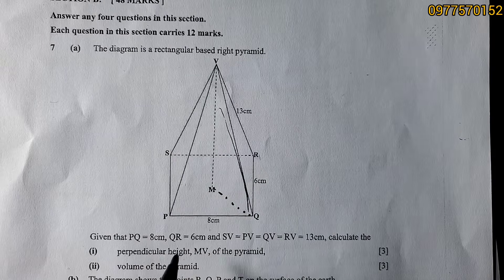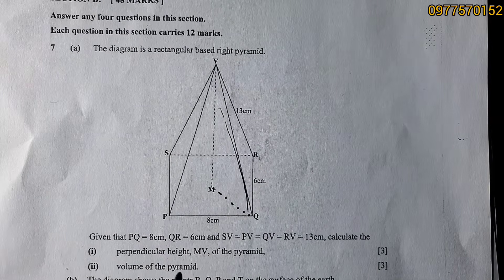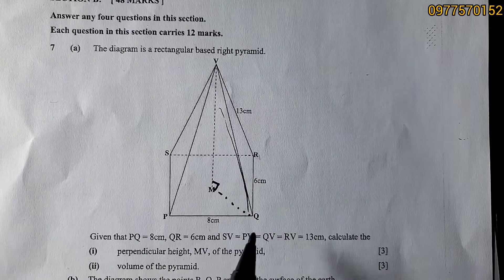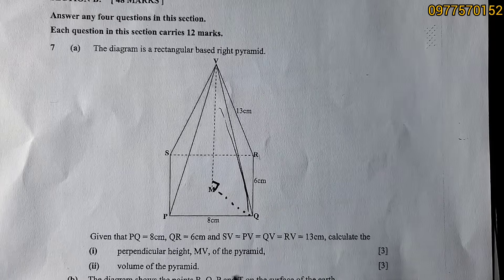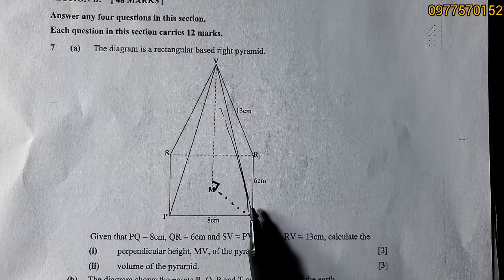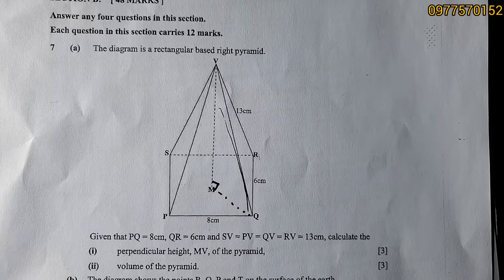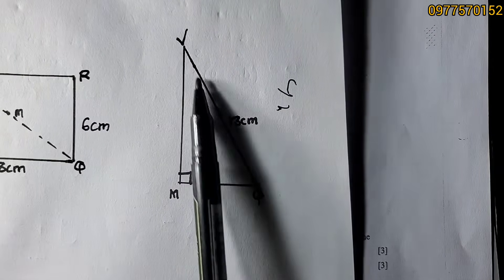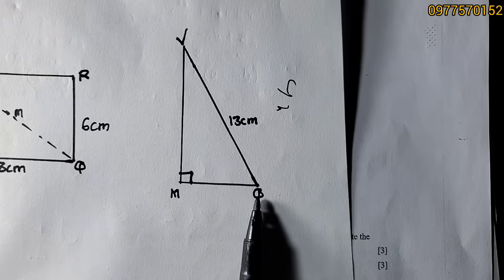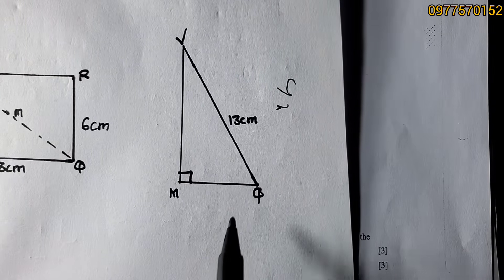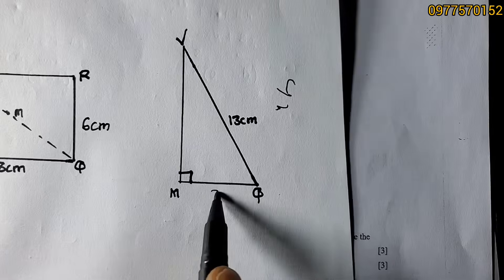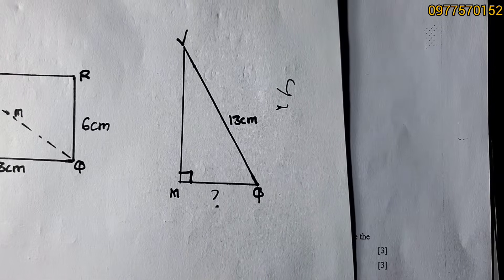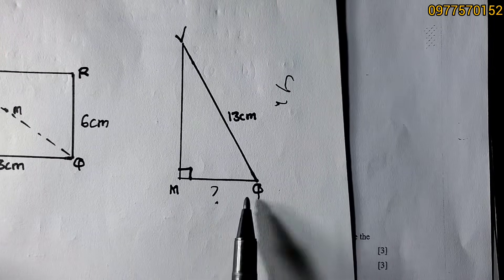The angle at MQ is 90 degrees, forming a right-angled triangle with sides MQ, VQ, and MV. We have the hypotenuse VQ, we don't know MV, and we need to find MQ first — only then can we find the perpendicular height MV.